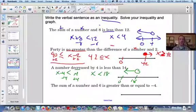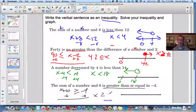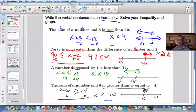And the last one, sum of a number in 6, so x plus 6 is greater than or equal to. So that's going to be this, negative 4. So minus 6, minus 6, and that gives us x is greater than or equal to negative 10. And that's going to be a closed circle, and we're going to be pointing to the right.